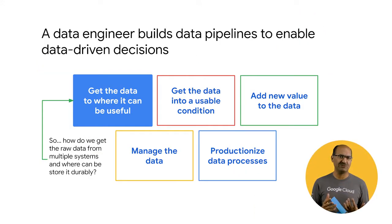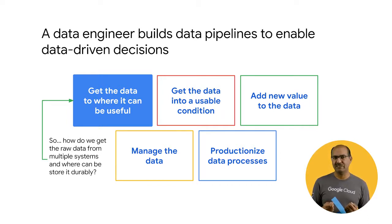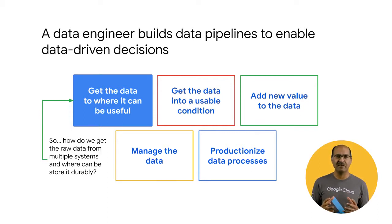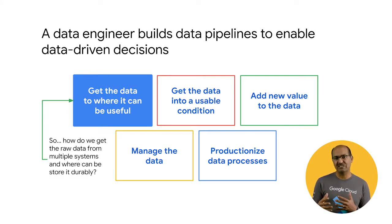What does a data engineer do? As we mentioned, a data engineer builds data pipelines. But why? Why does the data engineer build data pipelines? Because they want to get their data into a place such as a dashboard, a report, or a machine learning model, from where the business can make data-driven decisions. The point of a data pipeline is to make data-driven decisions. But in order to be able to do that, the data has to be in a usable condition so that someone can use this data to make their decisions.